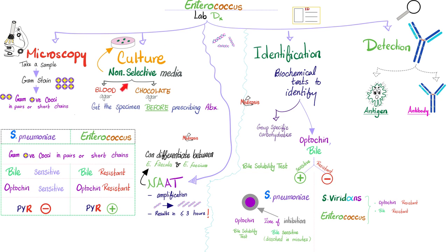Enterococcus can grow on blood or chocolate agar. Enterococcus is resistant to bile and resistant to optochin — i.e., bile will not kill it and optochin will not kill it. Enterococcus is PYR-positive.